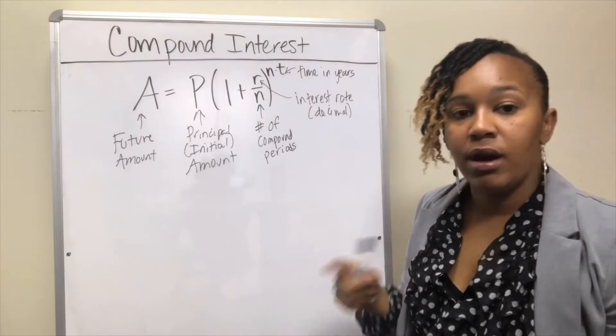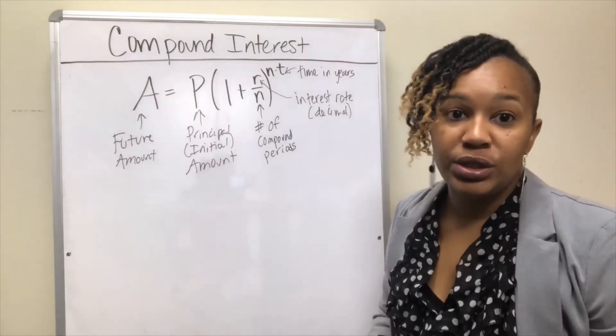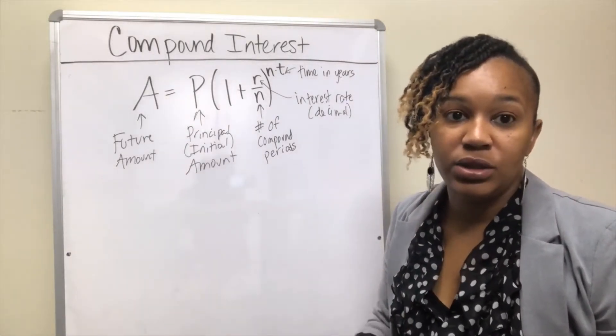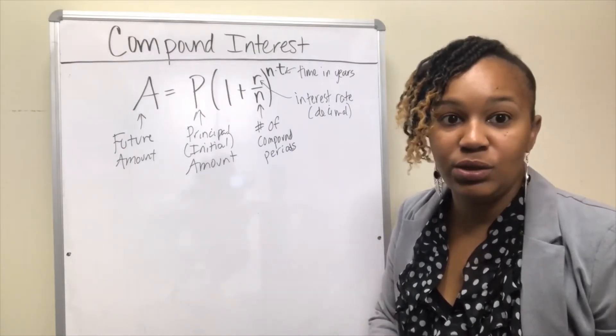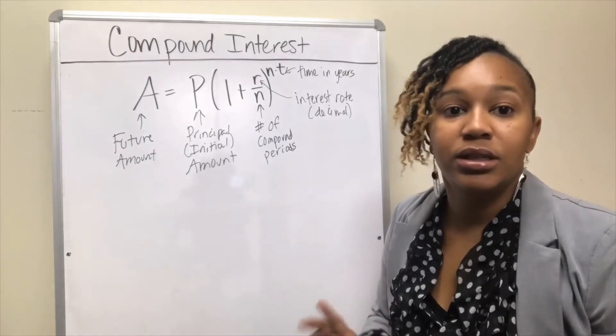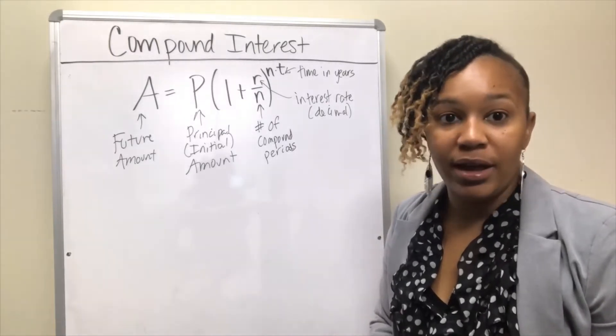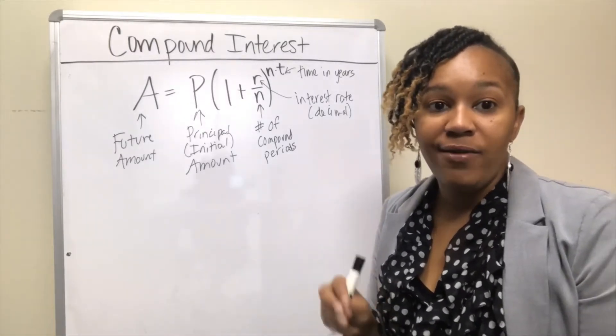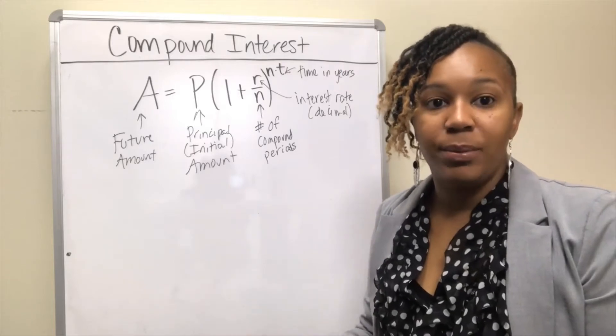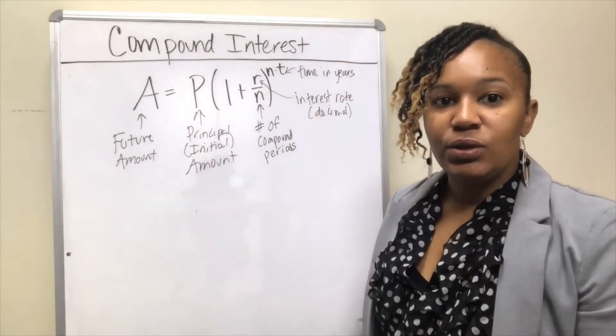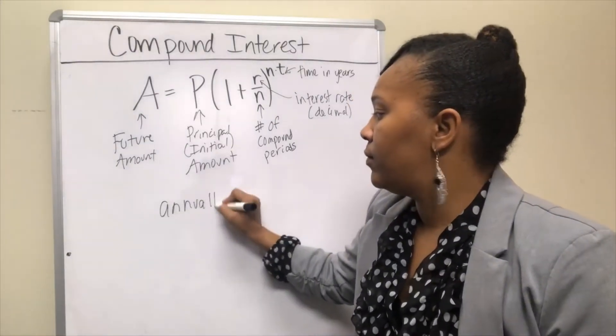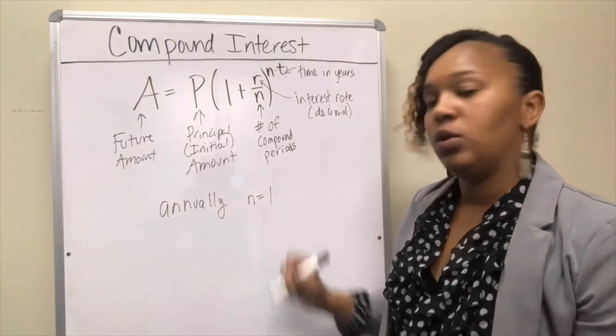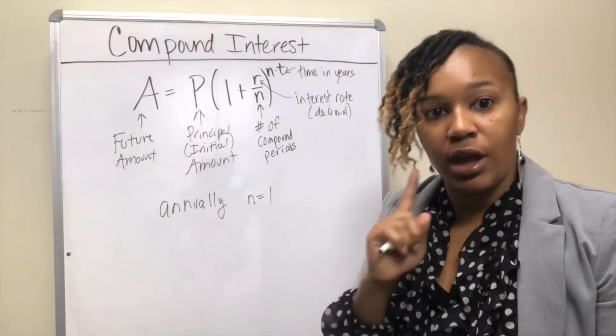So back to the number of compound periods. Financial institutions add interest to your account at certain intervals. Some do it annually, some monthly, some quarterly, some biannually. However often they do it, that's what your N represents. If your institution calculates interest annually, then your N would be equal to one. That means interest is added to your account once a year.